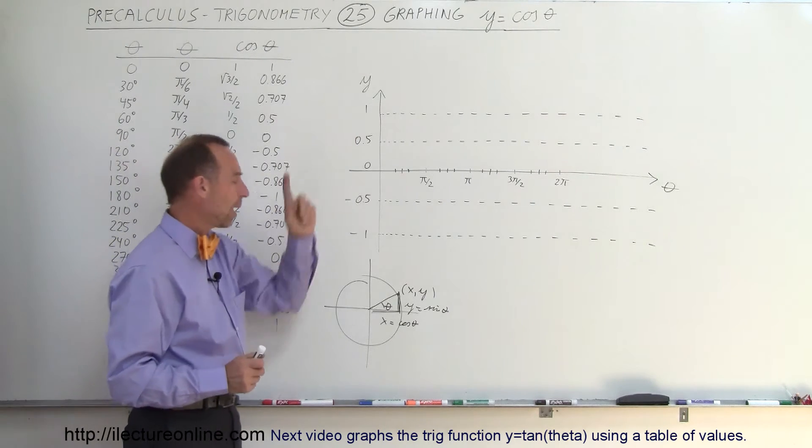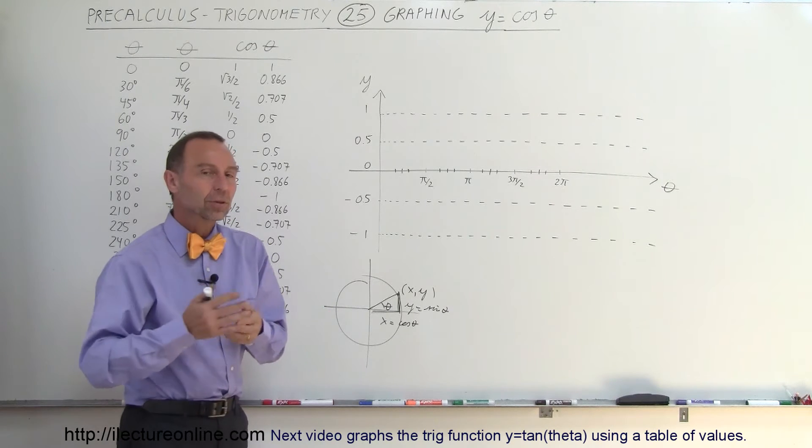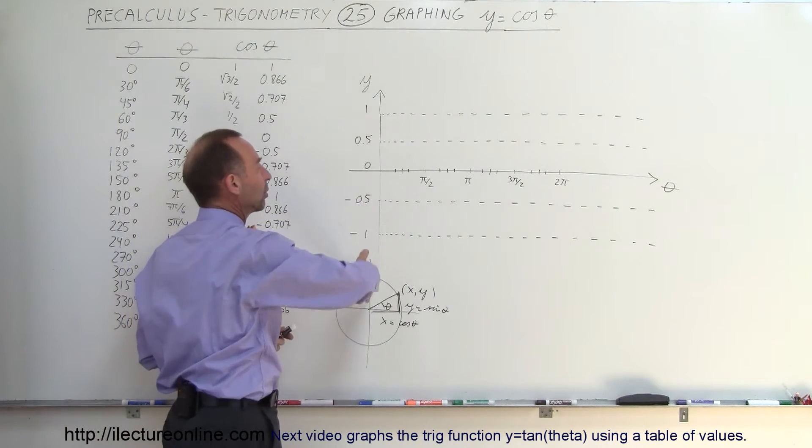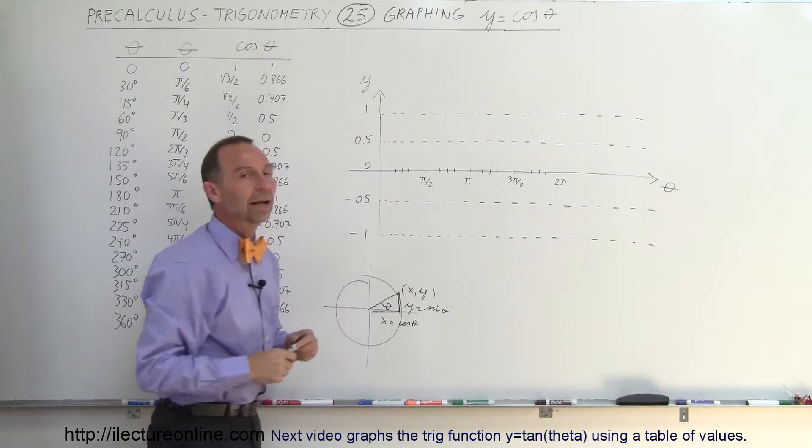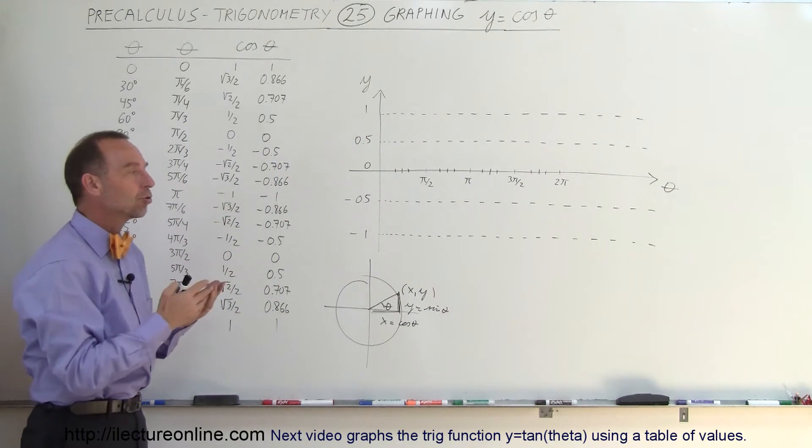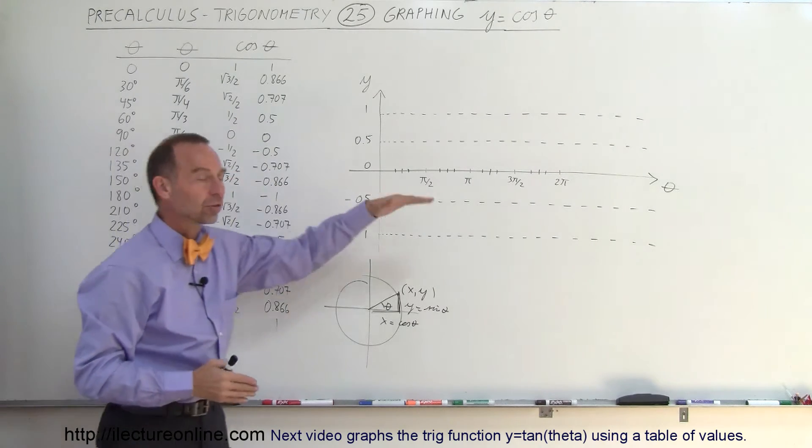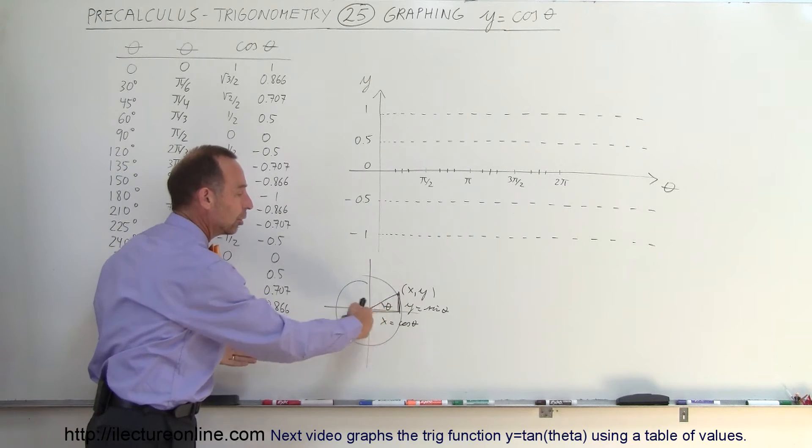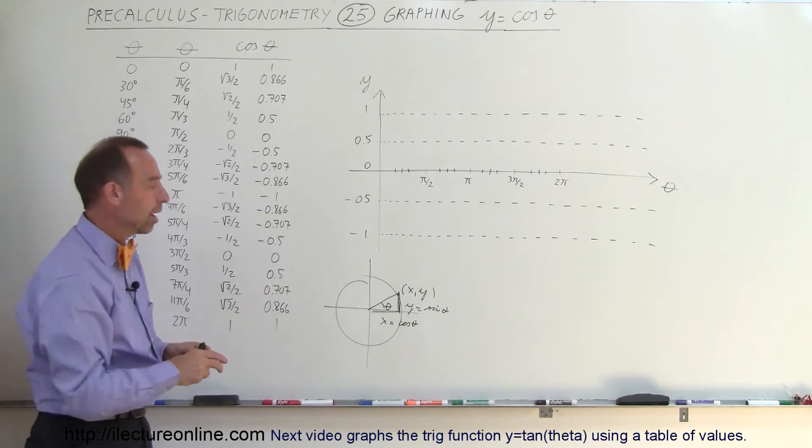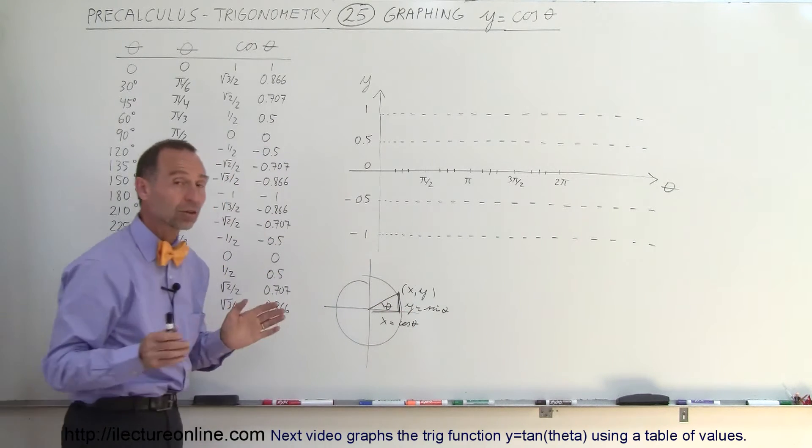You might say, wait a minute, why do you use y when you should use x? Yes, we can use x, but the typical convention is that the vertical axis is called y and the horizontal axis is theta. In trigonometry, the vertical axis is usually associated with y and the horizontal axis with theta, even though in the unit circle the magnitude of the x value, which is associated with the cosine of theta, is indeed in the x direction.